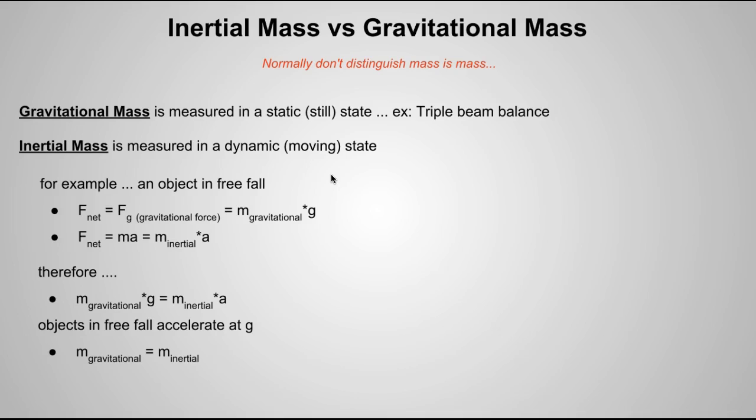Inertial mass is the measurement of the dynamic moving state of mass. This is the idea we talked about with the apparent weight. It's kind of the same thing, but not really. In some cases, the inertial mass and the gravitational mass equal the same. That's if it's in a free fall object. You'll have an object that's falling through the atmosphere. Nothing's acting upon it but gravity. You can see there how the math all works out. The inertial mass and the gravitational mass can equal the same thing, but not always. It's usually slightly different. Good luck.